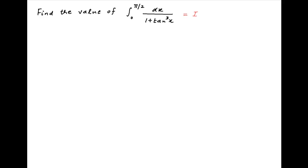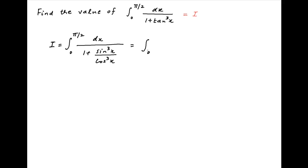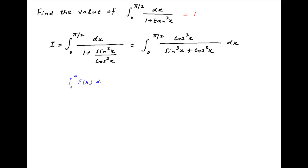Let's denote the given integral by I. Now tan cube x in the denominator can be written as sin cube x divided by cos cube x, and therefore the integral is equal to integral 0 to π/2 of cos cube x divided by sin cube x plus cos cube x. Recall a property of definite integrals: integral 0 to a of f(x) dx is equal to integral 0 to a of f(a minus x) dx.